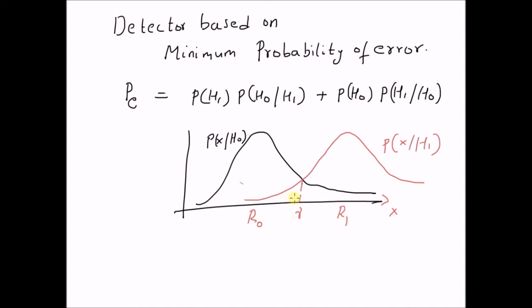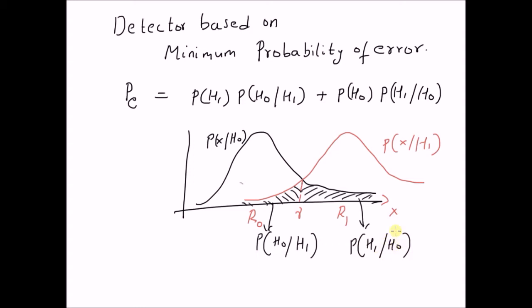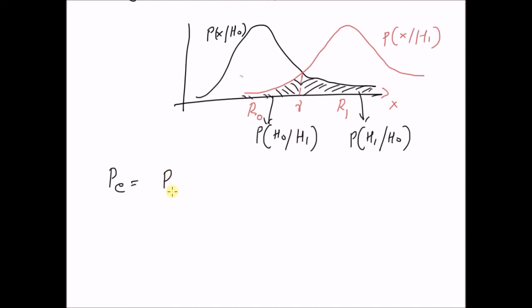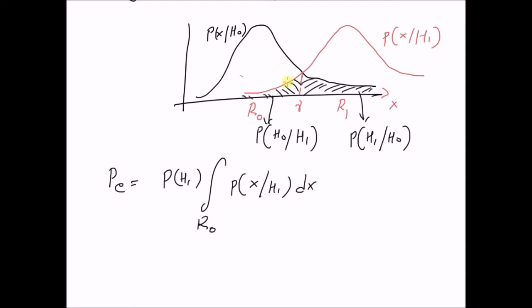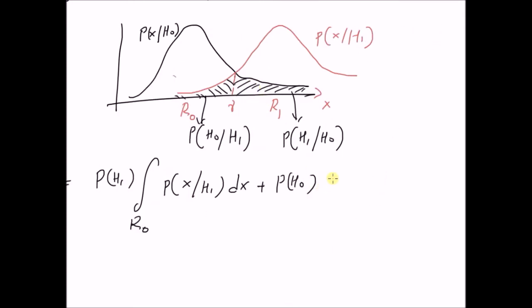The probability of miss P(H0|H1) is given by this region, and this region gives the probability of false alarm P(H1|H0). Therefore, the probability of error equals the prior probability P(H1) multiplied by the area under the curve P(X|H1) over region R0 — that is the integral over R0 of P(X|H1) dx — plus the prior probability P(H0) multiplied by the area under P(X|H0) over region R1, that is the integral over R1 of P(X|H0) dx.